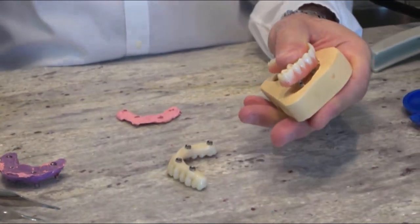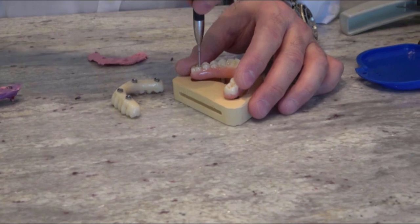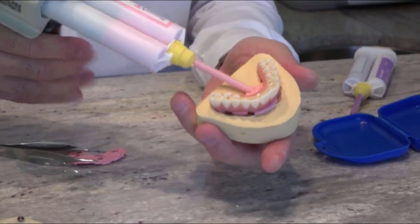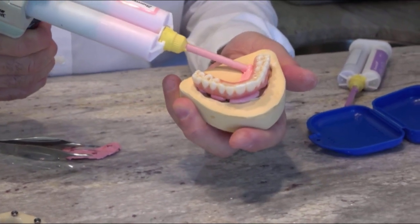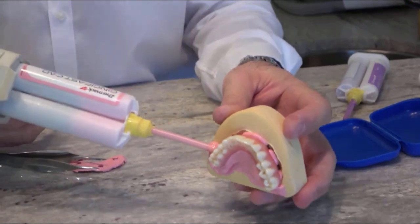This is the master model. You screw everything in, inject it really hard so you can see it's coming out from the other side, and squeeze more than you need because we can always cut away the excess. See how much more I put in and you see it comes out from the buccal?